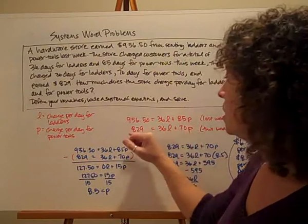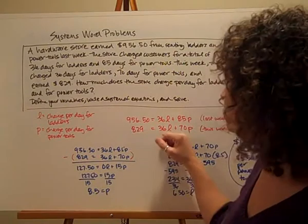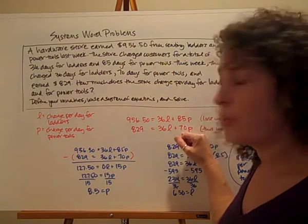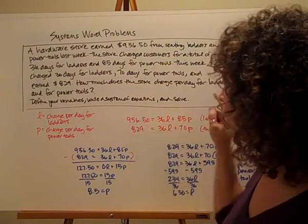This week's is going to look very similar. We have a total of $829. We charge 36 days for ladders and 70 days for power tools. So I have my two equations.